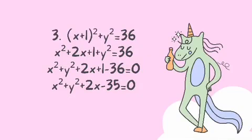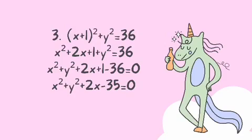Third problem: x plus 1 squared plus y squared equals 36. Expand our square of a binomial. Square the first term that is x squared, multiply first and second term that will become 2x. Square the second term that is 1. Rearrange our equation: x squared plus y squared plus 2x plus 1. Our general form is equated to 0, so we need to subtract 36 and set it equal to 0. Combining: x squared plus y squared plus 2x minus 35 equals 0.